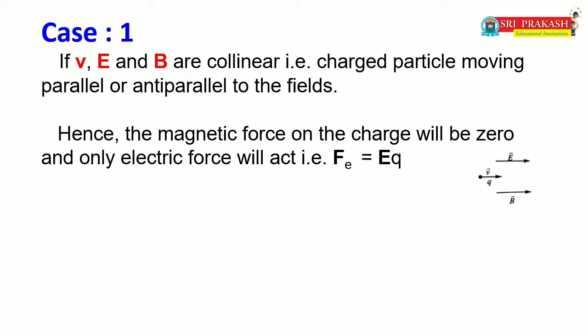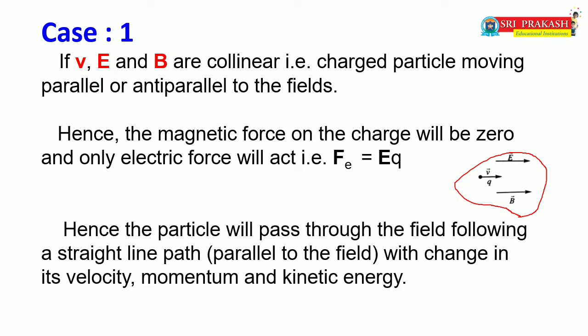As you can see in the diagram, all are collinear and in the same direction. You can also consider the velocity in the opposite direction, that is anti-parallel. Hence, the particle will pass through the field following a straight-line path, because the force due to the electric field is always in the direction of the electric field. It will follow a straight line but with change in its velocity, momentum, and kinetic energy — because force causes acceleration, which changes velocity, and thus momentum and kinetic energy.